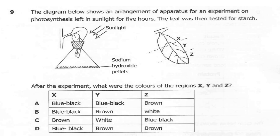Question 9. The diagram below shows an arrangement of apparatus for an experiment on photosynthesis left in sunlight for 5 hours. The leaf was then tested for starch. We have sunlight, sodium hydrogen carbonate, and the leaf is left on X, Y, and Z. After the experiment, what were the colors of the regions X, Y, and Z?